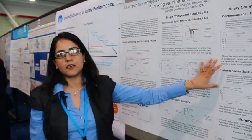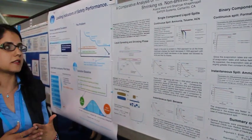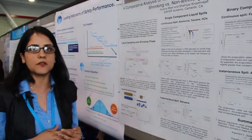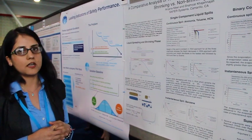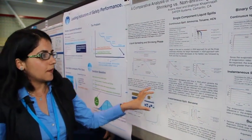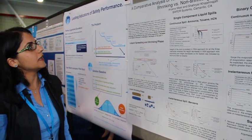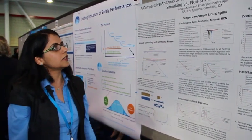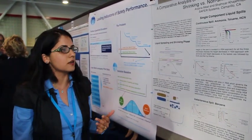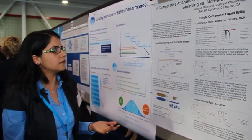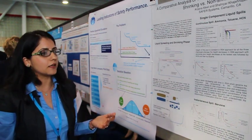We then apply it for instantaneous spills as well as binary component spills, and we find that in all these scenarios the height-shrinking approach gives a better result than the radius-shrinking approach. In summary, we are comparing the non-shrinking area pool versus the shrinking area pool model, and we believe that the non-shrinking area pool model is better.